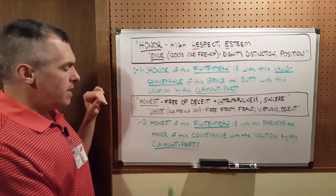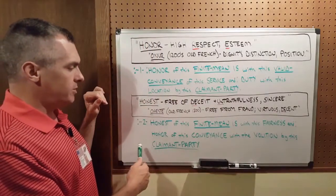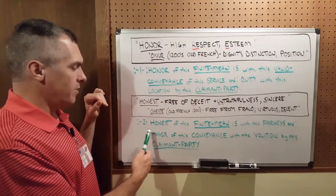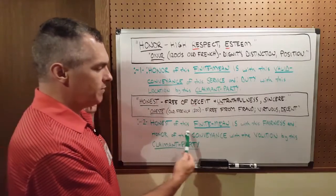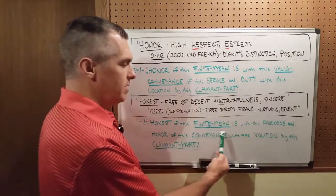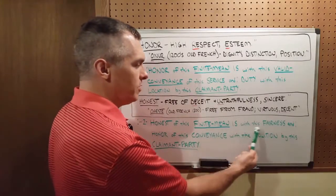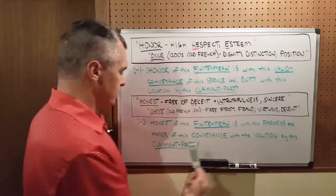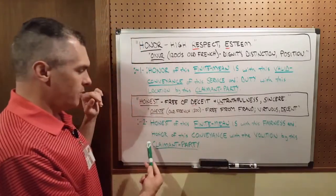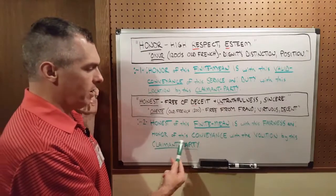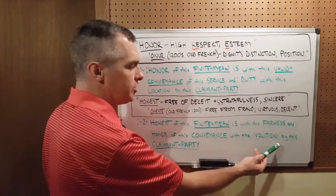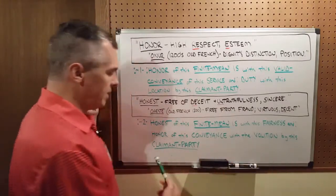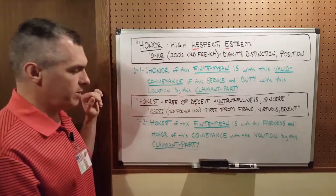From my quantum dictionary, I have defined honest as: honest of this finite mean is with this fairness and with this honor of this conveyance, with the volition by this claimant party.